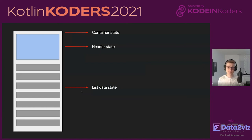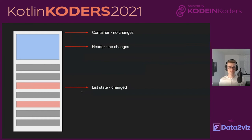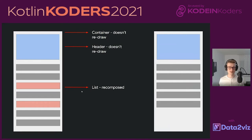If we had a container Composable and its corresponding state, a header, and a list — and we want to change just the list by removing two items — the container and the header won't redraw. The list notices differences in its dataset and it recomposes, removing those two items visually. If you don't update any state within your components, you don't have to worry about your entire view hierarchy redrawing. Only the function affected by the state change is going to redraw.